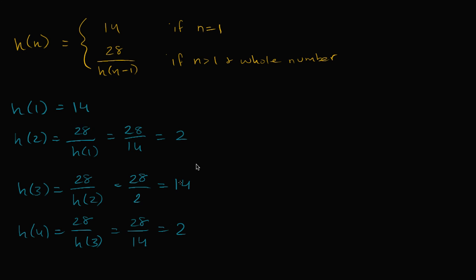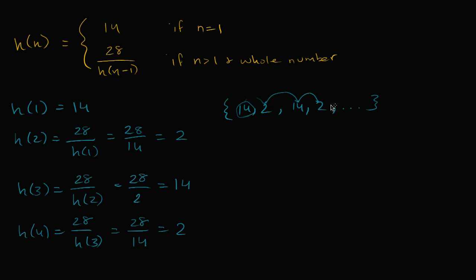If we think of this as a sequence: the first term is 14, then two, then 14, then two. So one way to think about this sequence is that we just keep alternating between 14 and two — all the odd terms are 14, all the even terms are two. Or another way: we start with 14, and each successive term is 28 divided by the previous term. 28 divided by 14 is two, 28 divided by two is 14, and we keep going on and on.